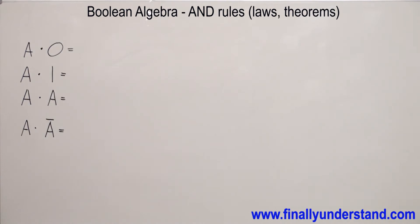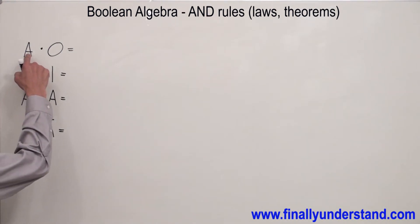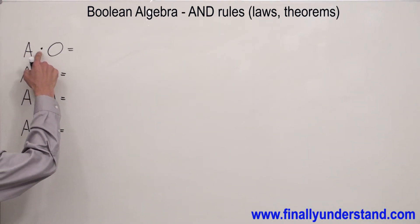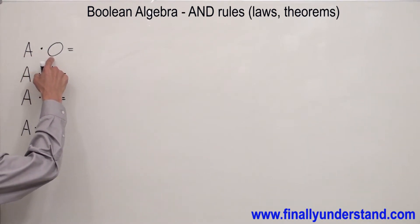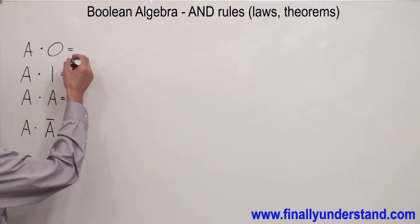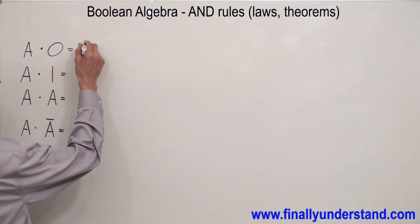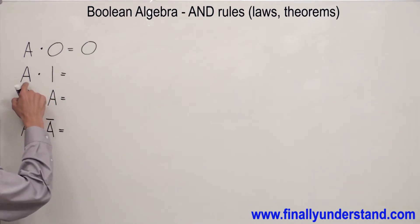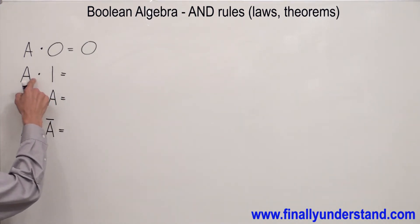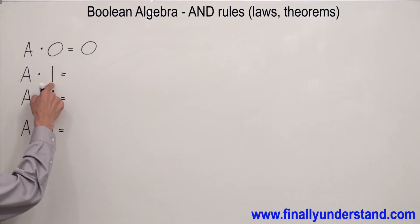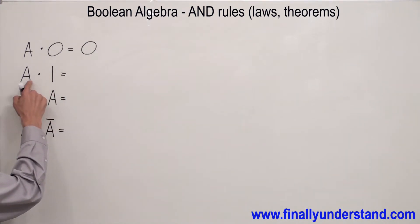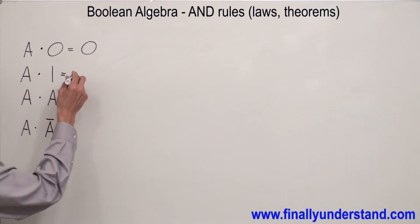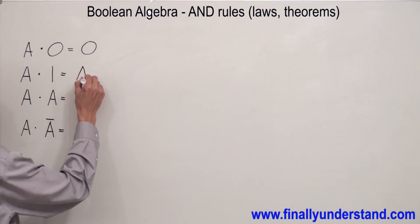This is nothing else, just the product. A times zero — anything times zero is going to give me always zero. A times one — A times one is going to give me always A.